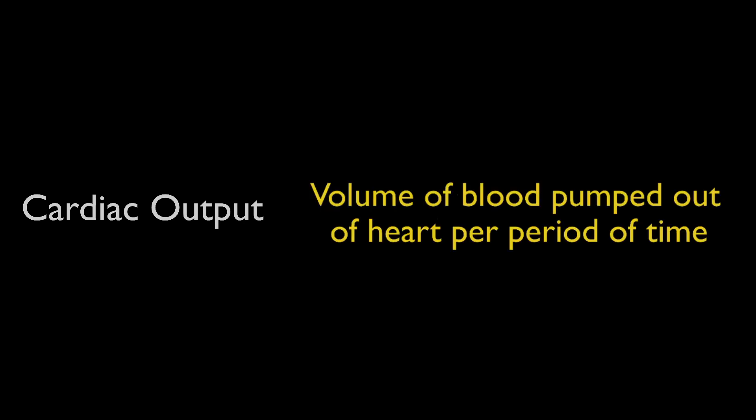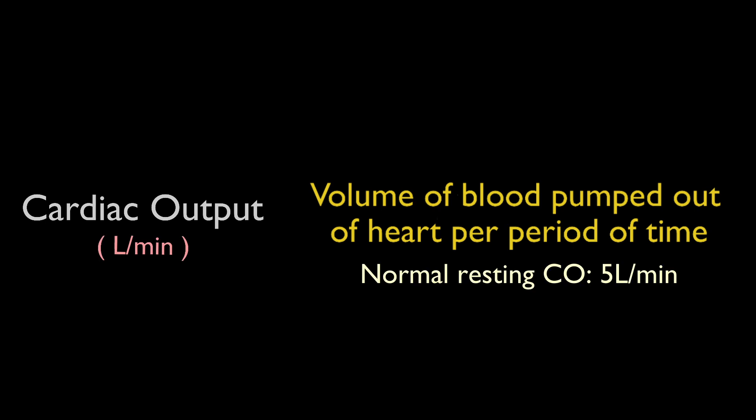Cardiac output is one of many ways to measure how efficiently the heart can supply the body's tissues with oxygen and nutrients. It can be measured using various techniques such as echocardiography and thermal dilution. Cardiac output is defined as the amount of blood that is pumped out of the heart per period of time, and is most commonly expressed in litres per minute. Normal resting cardiac output is around 5 litres per minute, but it can increase during exercise or in response to stress.